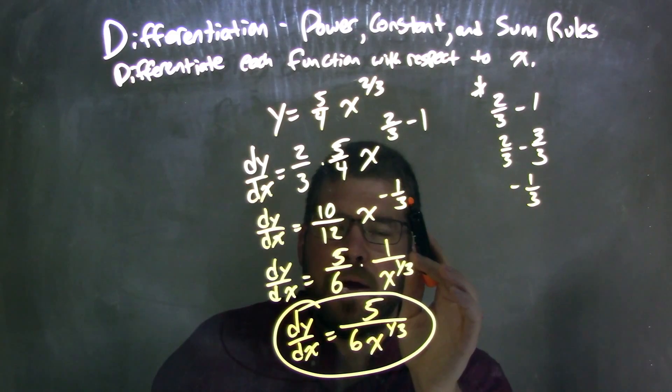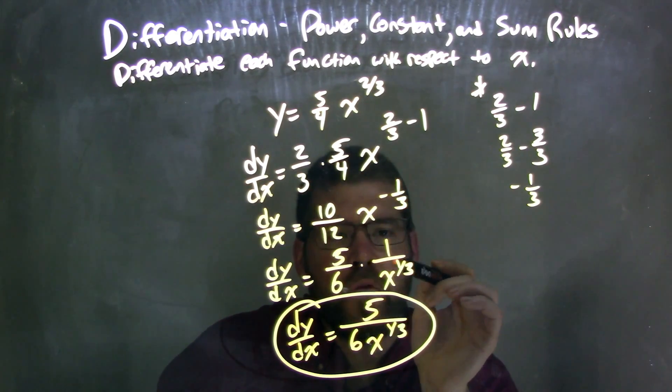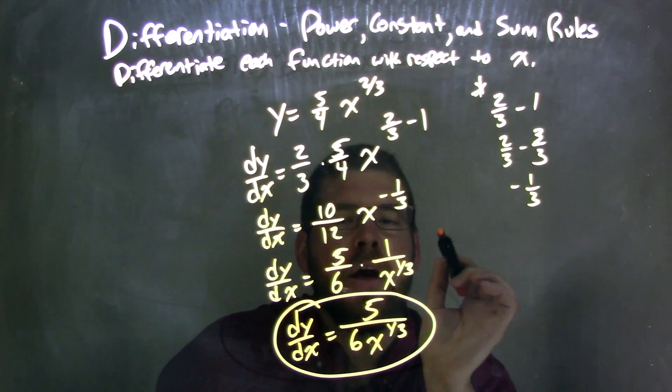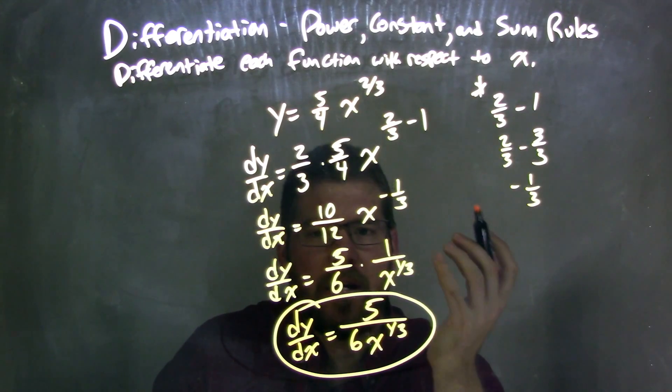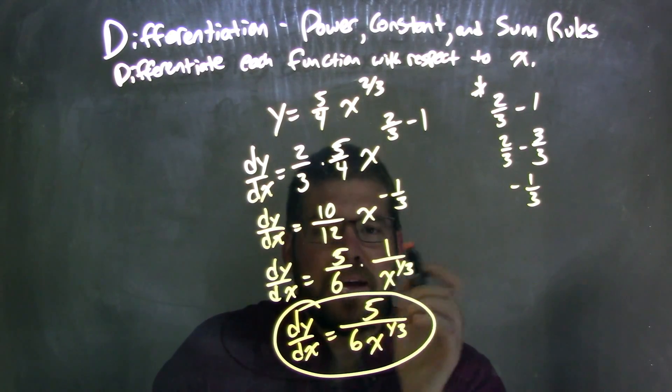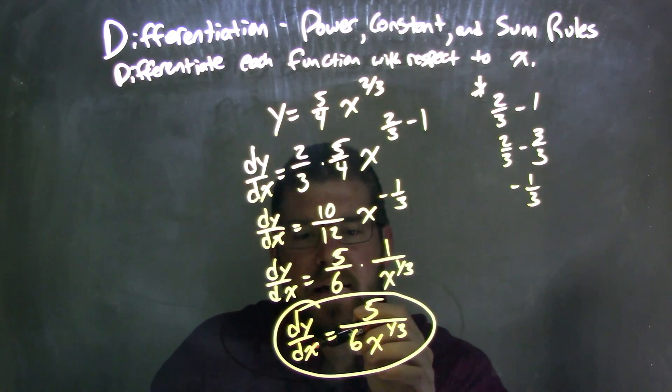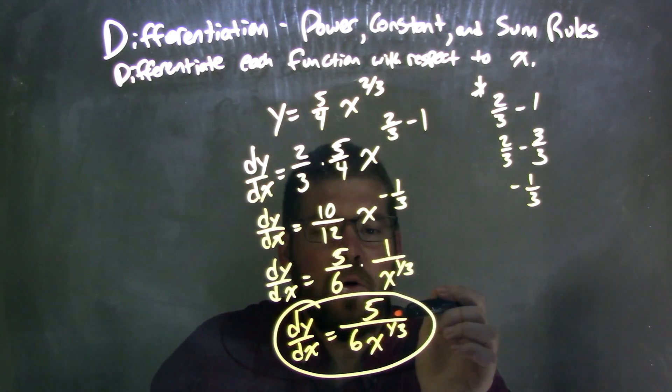x to the negative 1 third power is the same thing as 1 over x to the positive 1 third power. We don't like negative exponents in our final answer. So now we can multiply across the numerator and across the denominator, giving us our final answer: dy dx equals 5 over 6x to the 1 third power.